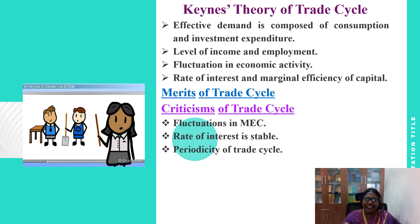Now I would like to highlight Keynes' Theory of Trade Cycle. Keynes does not develop a complete and pure theory of trade cycles. According to Keynes, effective demand is composed of consumption and investment expenditure. It is effective demand which determines the level of income and employment. Therefore, changes in total expenditure — that is, consumption and investment expenditure — affect effective demand and bring about fluctuations in economic activity.